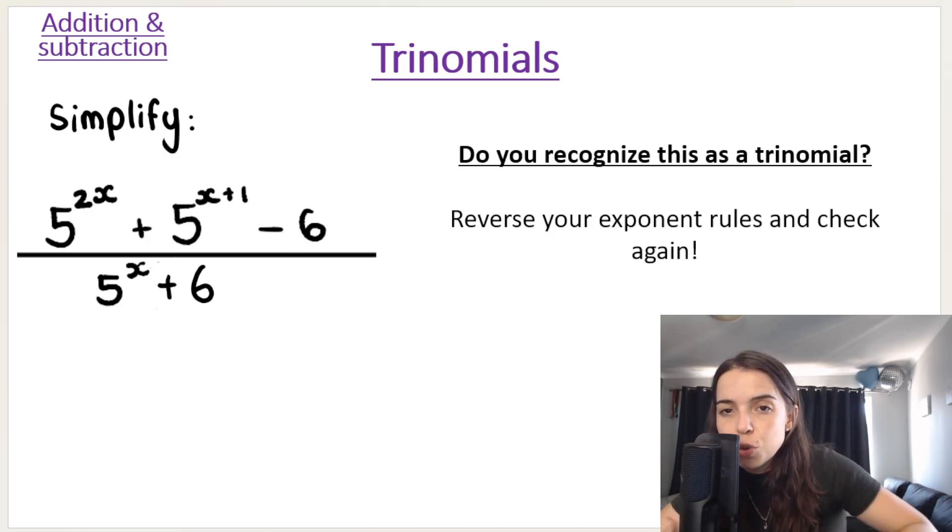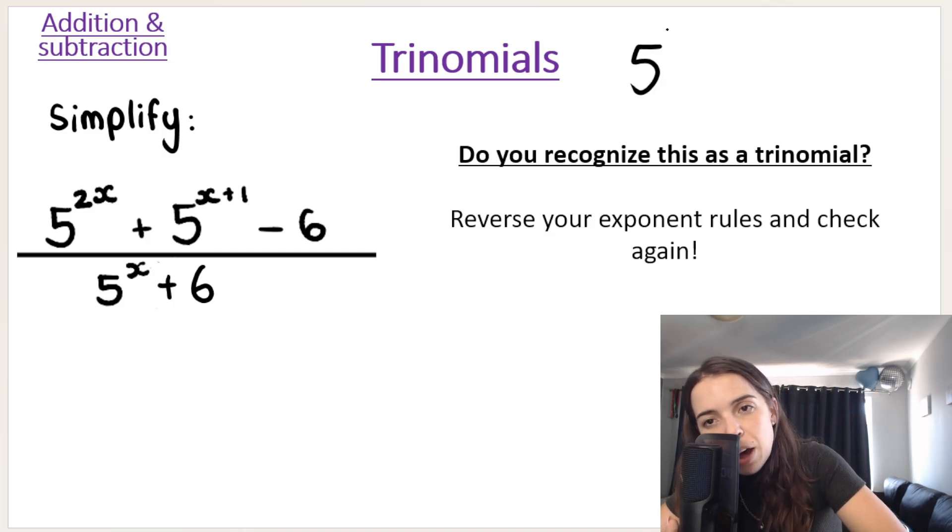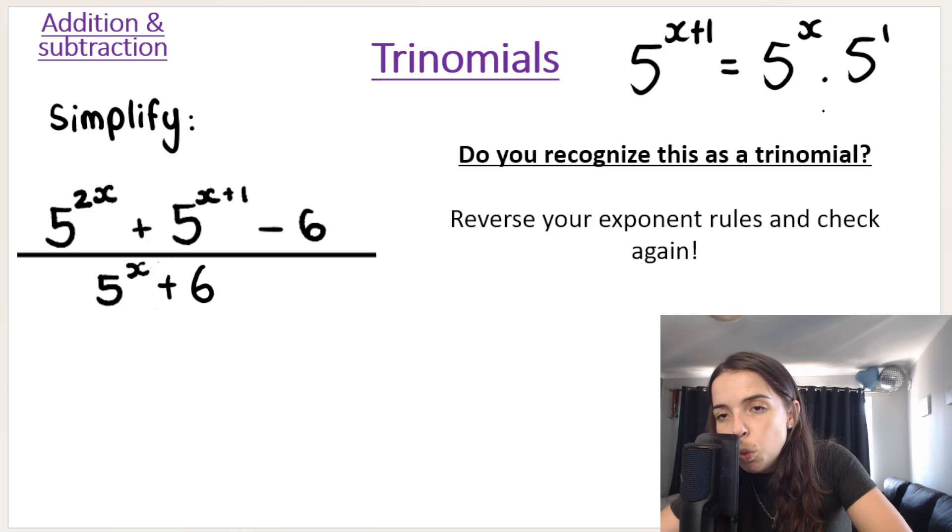But what do I mean by reversing exponent rules? So, say for example, remember I taught you in a previous video, if you have 5 to the power of X plus 1, you can rewrite that as 5 to the power of X multiplied by 5 to the power of 1. Why?